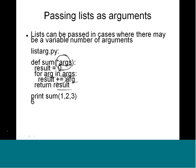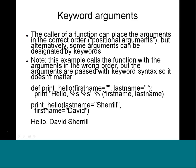Since star args is a pointer, we can pass a list into it. If you say print sum of 1, 2, 3 the answer is 6. Note the syntax of how we pass the arguments.